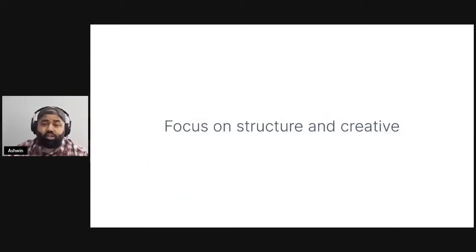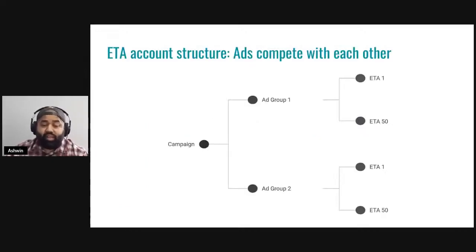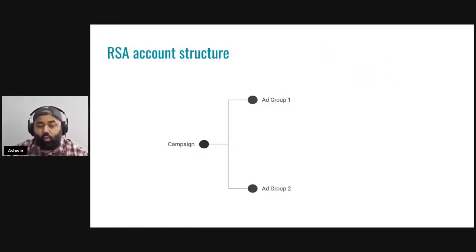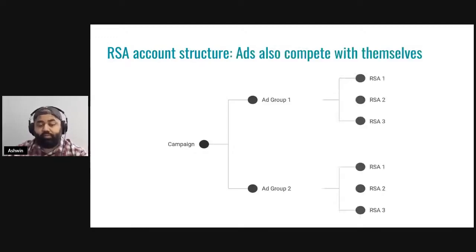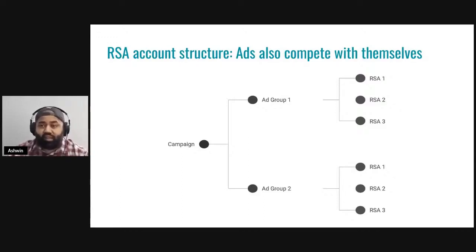What you should instead focus on are structure and creative. Along with first-party data, these two are probably going to be what really allows you to get the most out of a more automated version of Google Ads. With ETAs, account structure was pretty straightforward — a campaign, multiple ad groups, each targeting a group of keywords. With RSAs, up until the ad group level it's largely the same, but at the ad level, RSAs don't just compete against other ads in the ad group — they compete against versions of themselves, across all the combinations Google thinks might be a good fit.